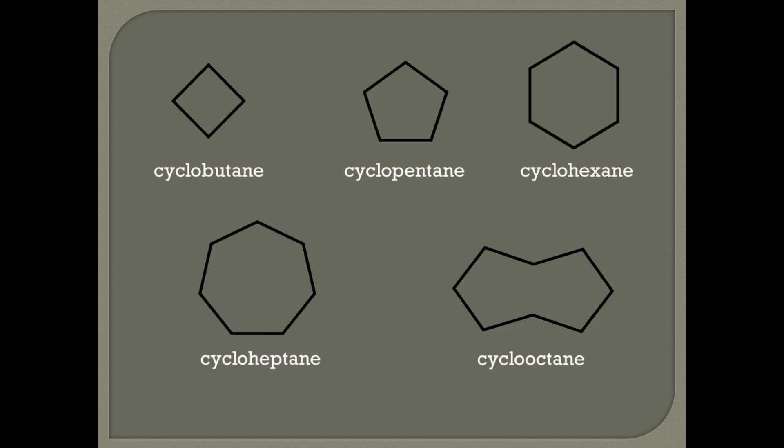Here are some other cycloalkanes. The first one has four carbon atoms, so it's cyclobutane; cyclopentane for 5; cyclohexane for 6; cycloheptane for 7; cyclooctane for 8; and so on and so forth.